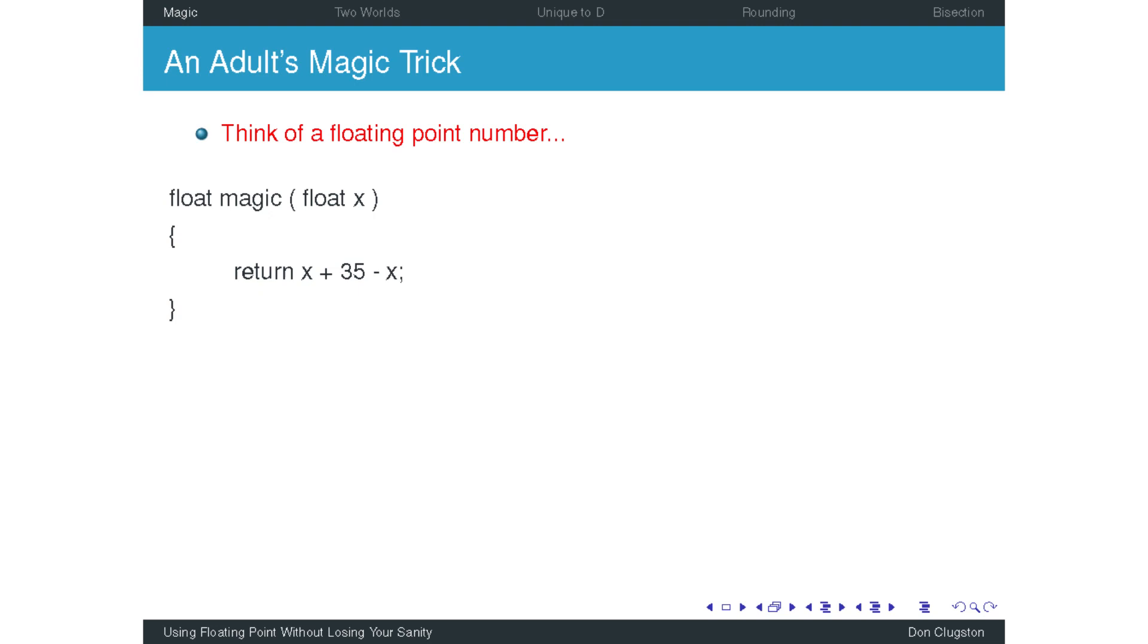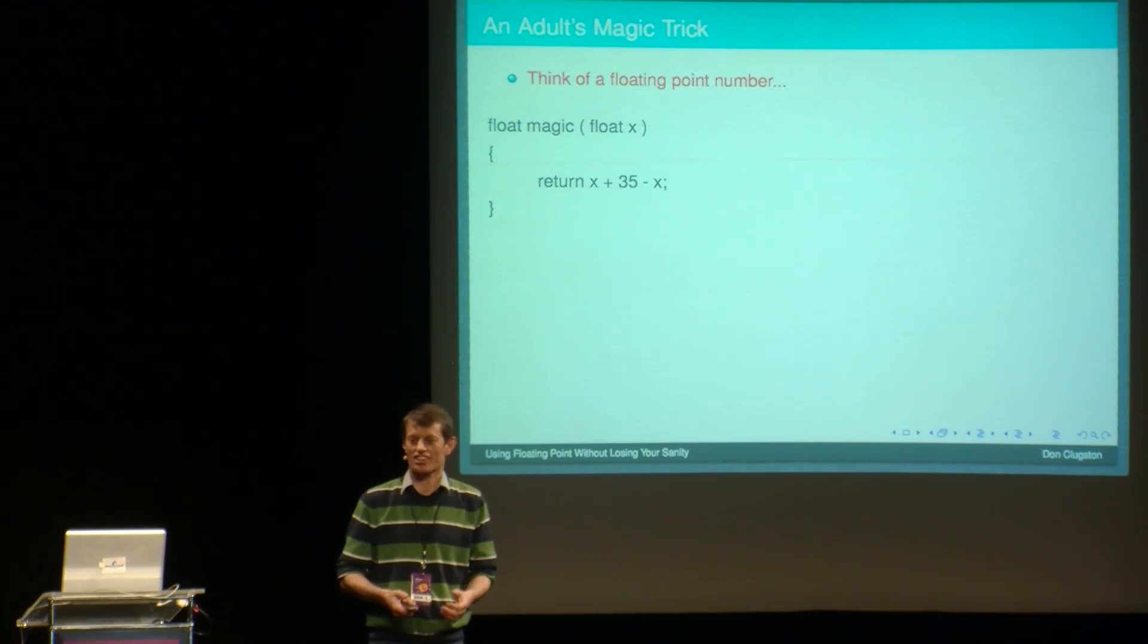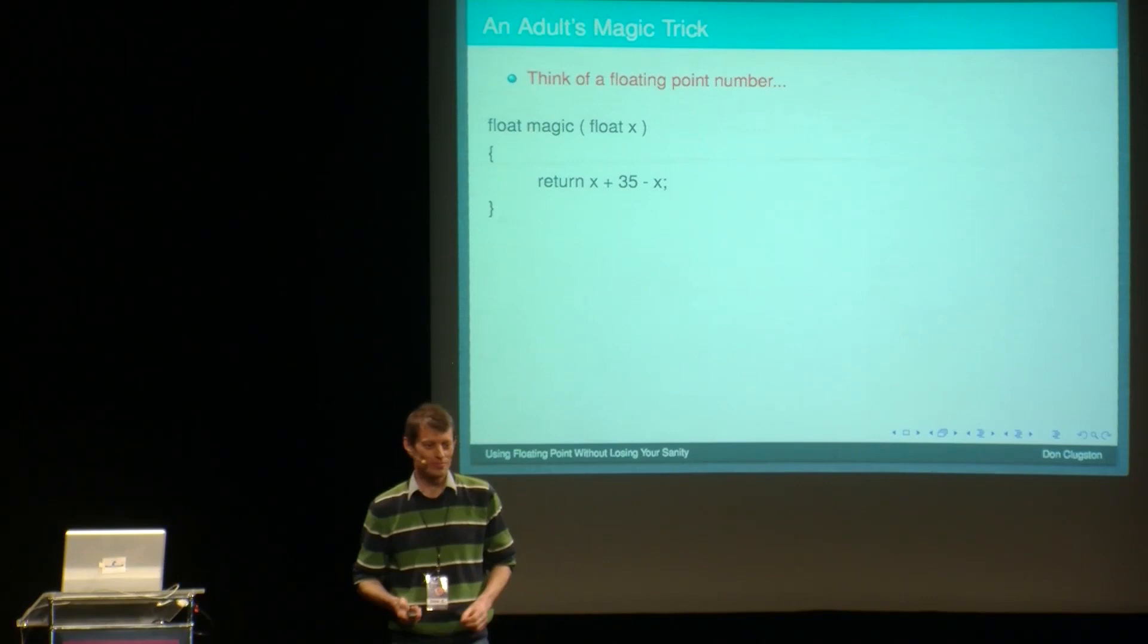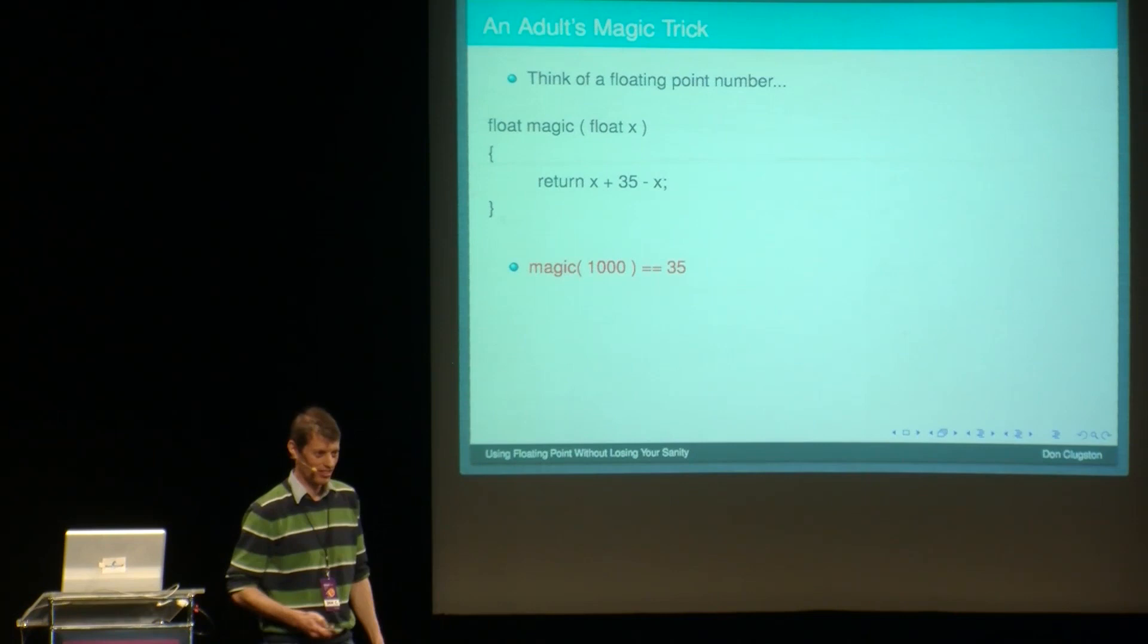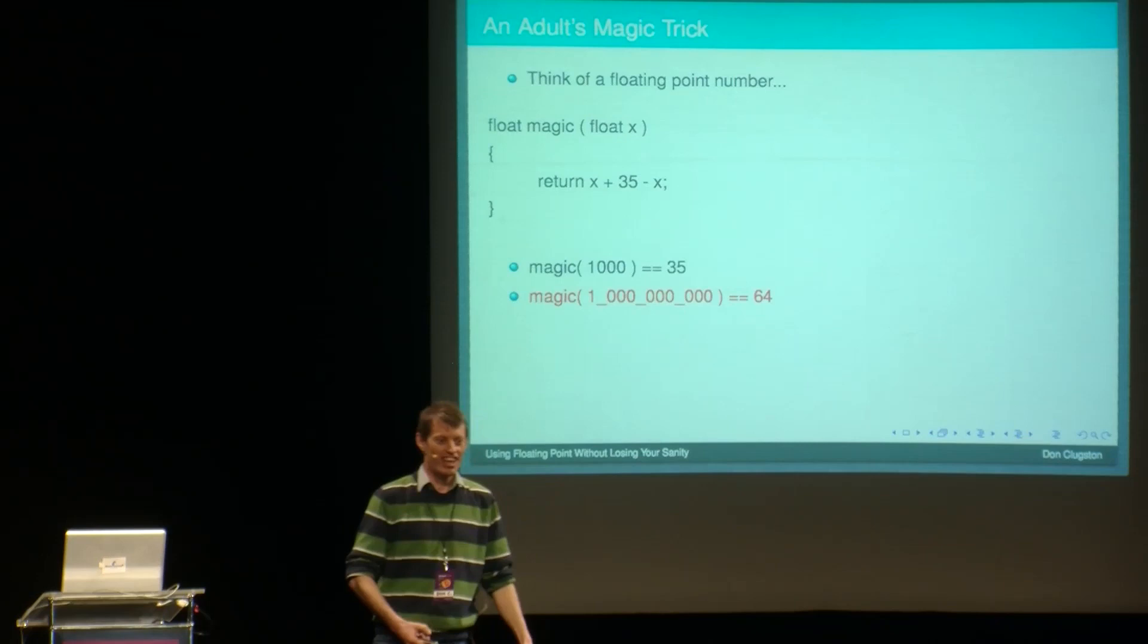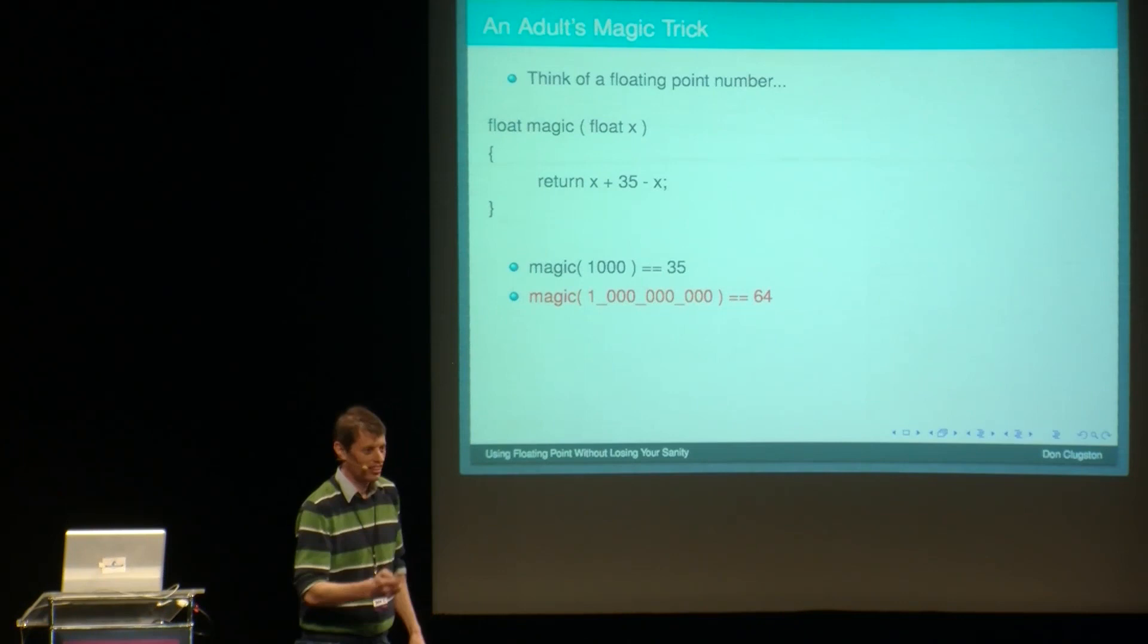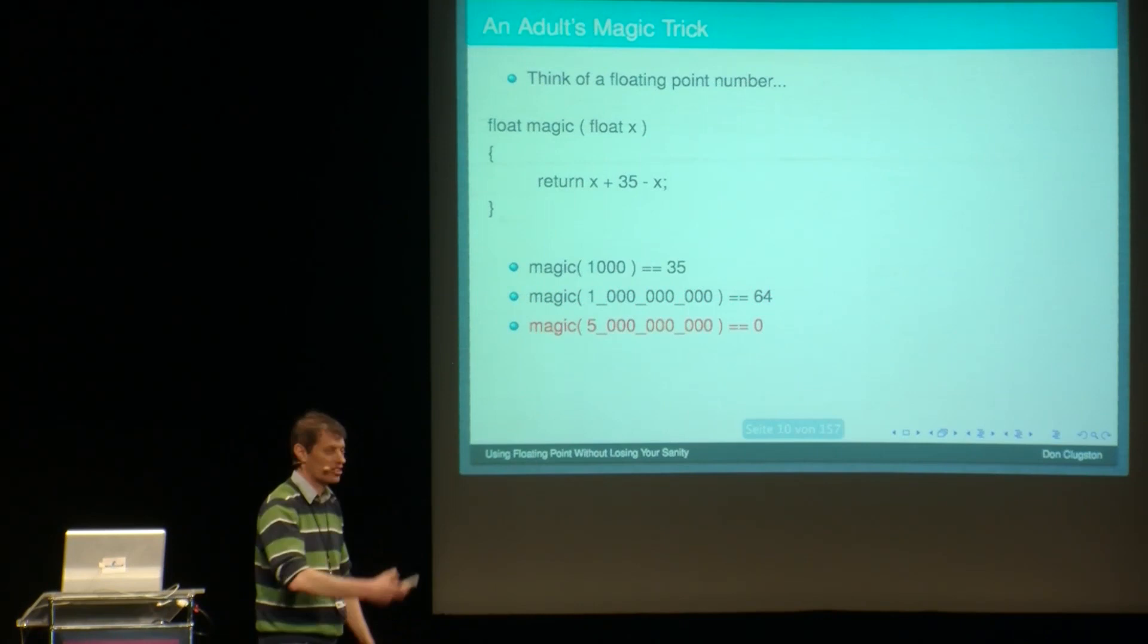Something a bit more interesting. An adult's magic trick. Almost exactly the same. But adults, to make it simpler for the adults, there's a lot less steps. Think of a floating point number, add 35, and take away the number you first thought of. Well, of course, put a thousand in, of course the answer is 35. Now let's try a billion. And I want a puff of orange smoke here. 64! Your 35 has turned into a 64.